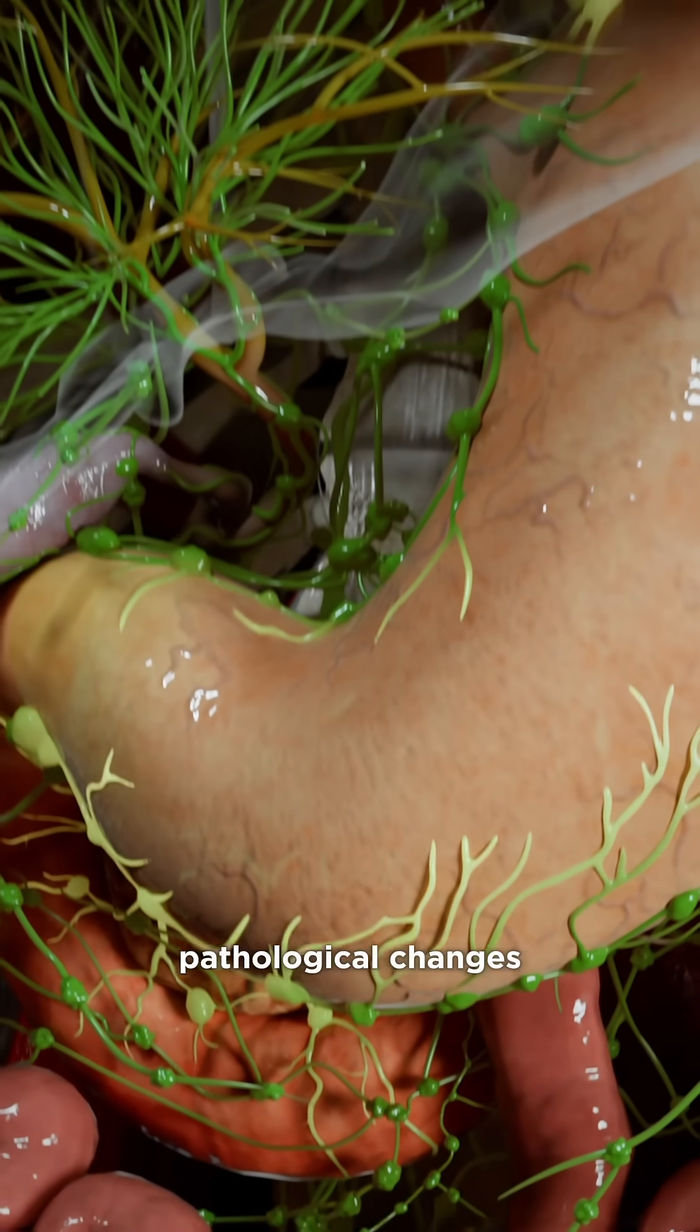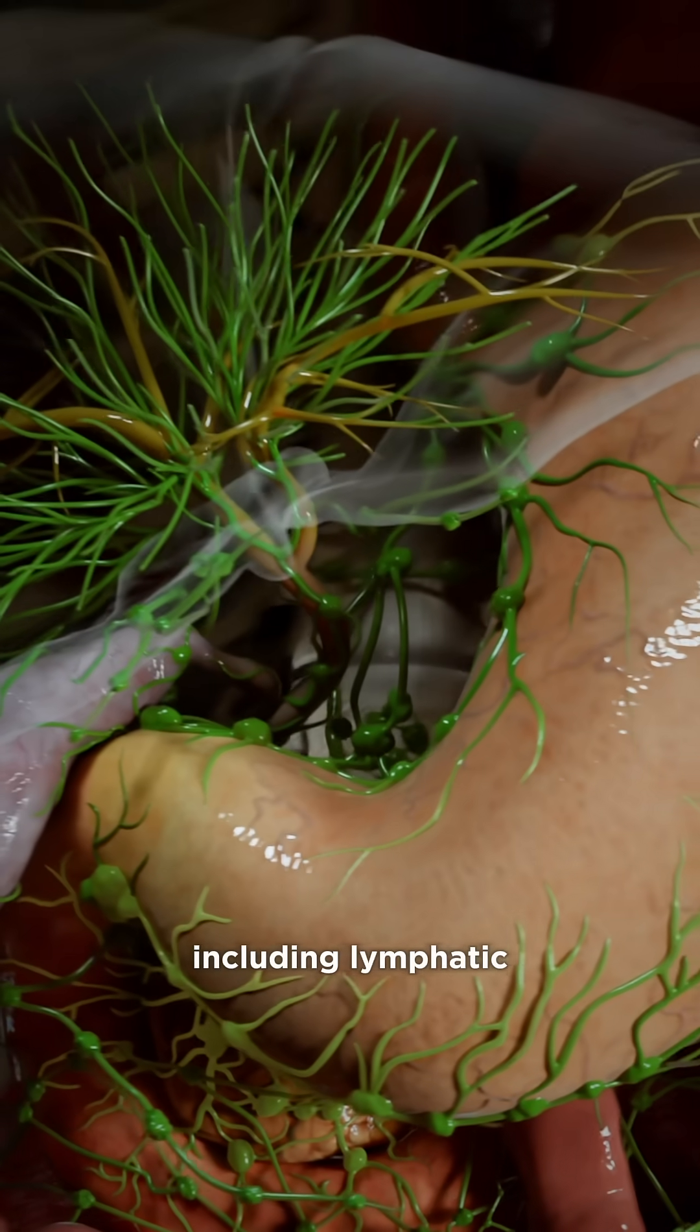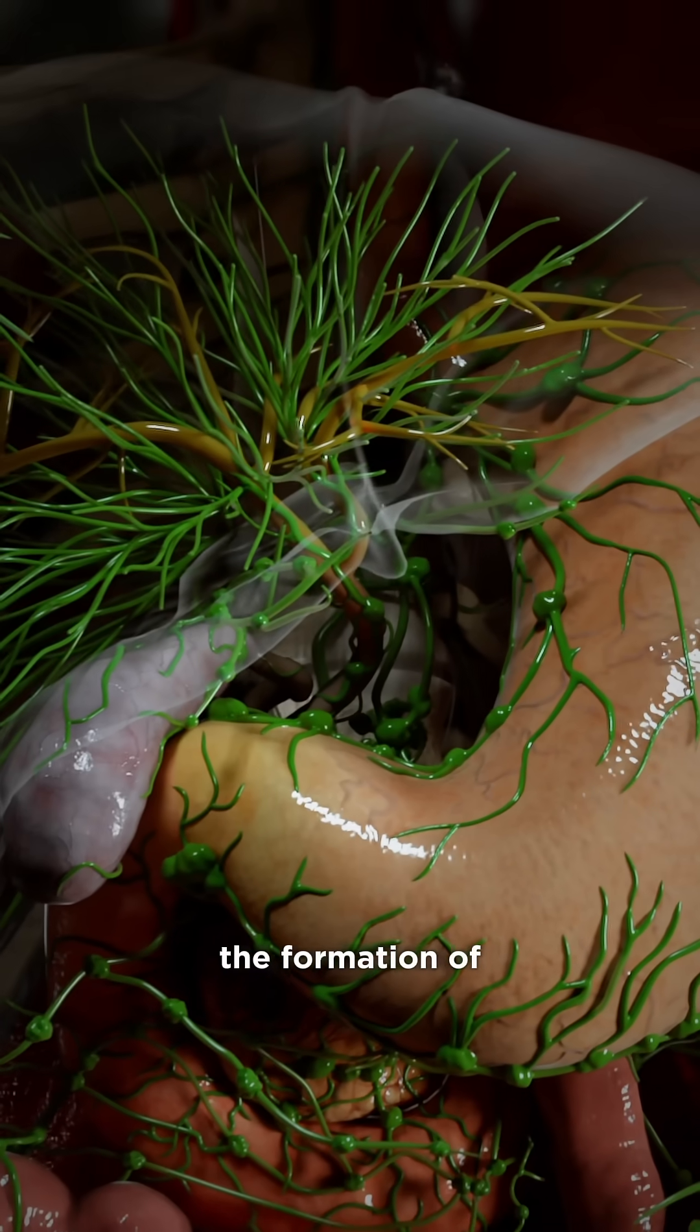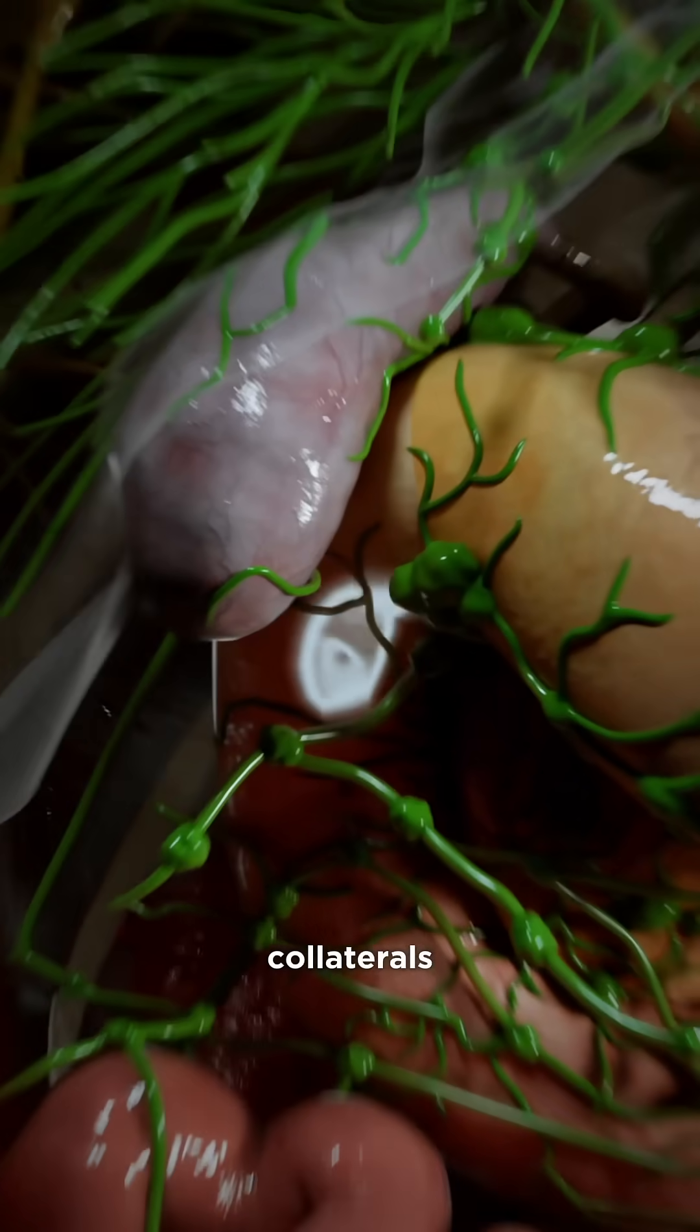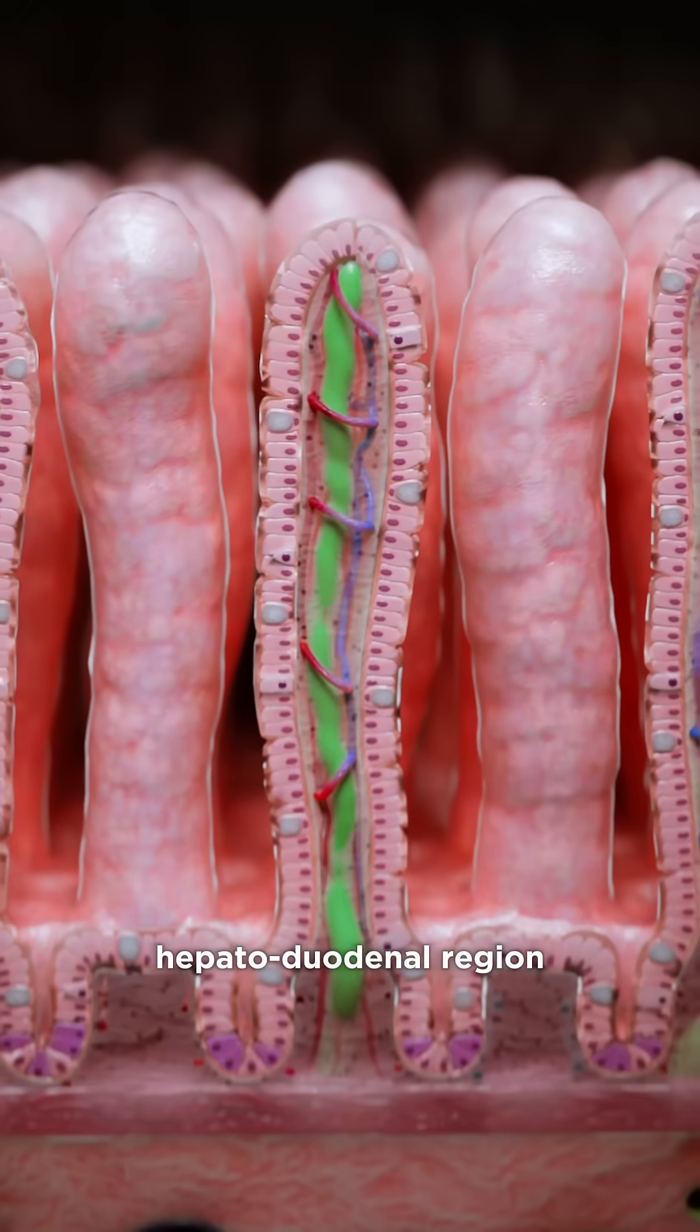This triggers a series of pathological changes, including lymphatic vessel dilation, the formation of lymphangiectasia, and the development of abnormal lymphatic collaterals, particularly in the hepatoduodenal region.